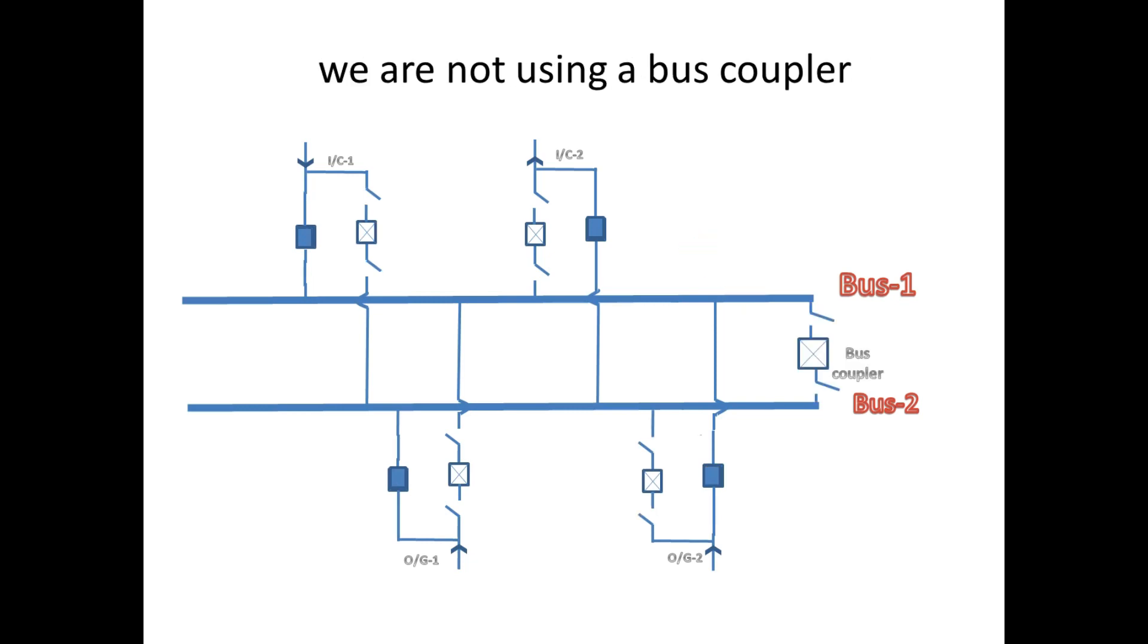Second, if we use a bus coupler, the power supply changeover will take more time due to bus coupler CB closing time and feeder CB closing time. But here we are not using a bus coupler, so there will not be much delay in power supply while closing the circuit breaker to transfer load from one bus to the other.